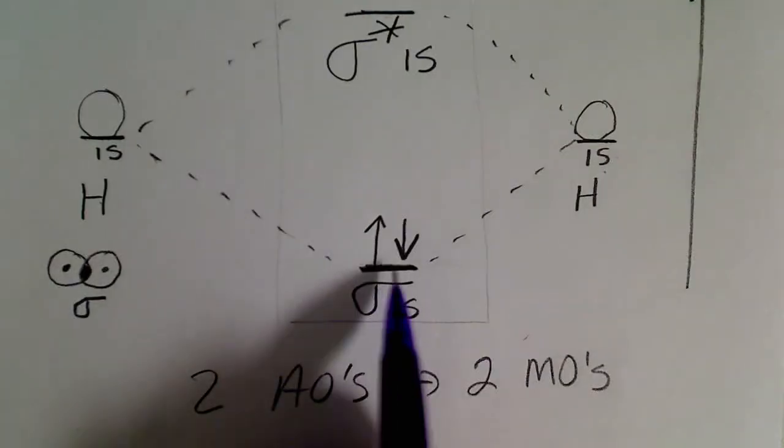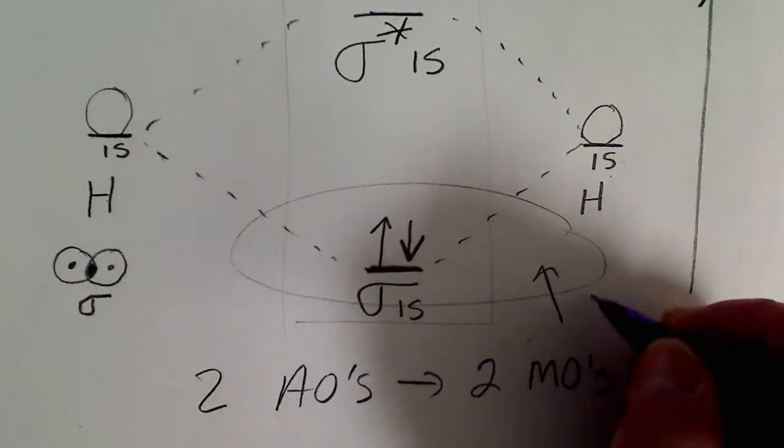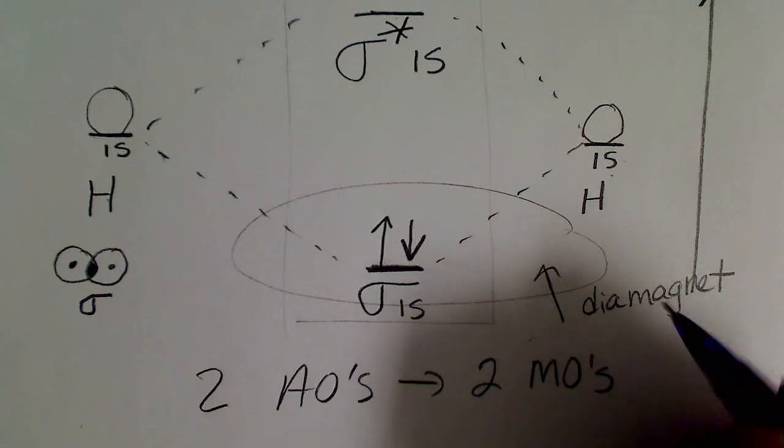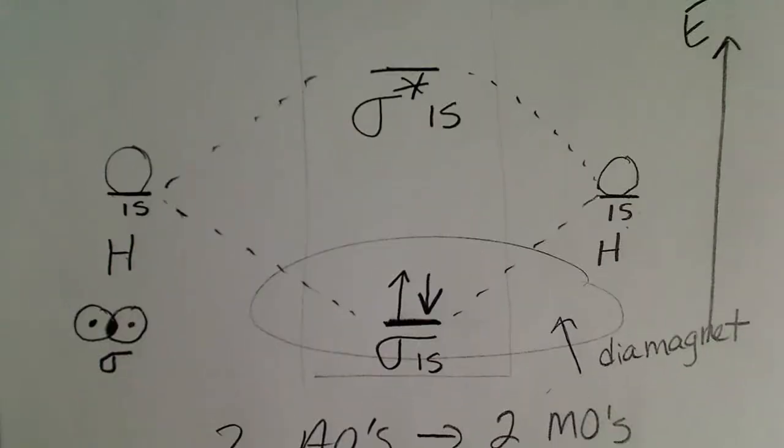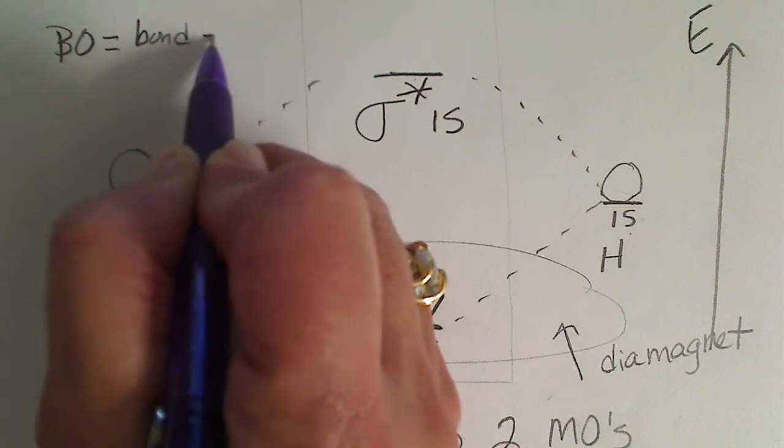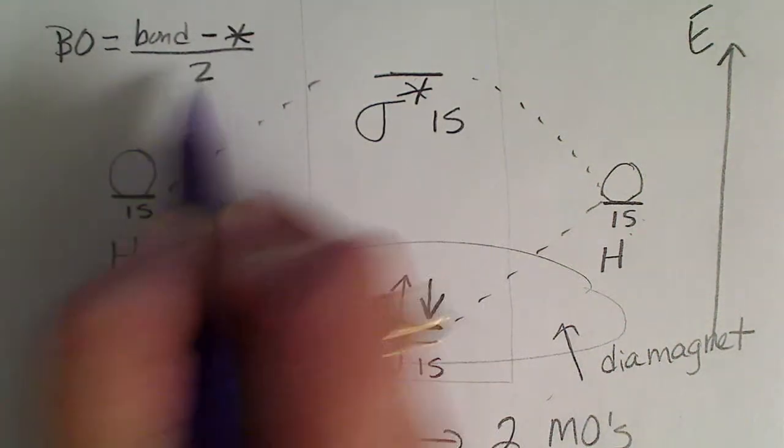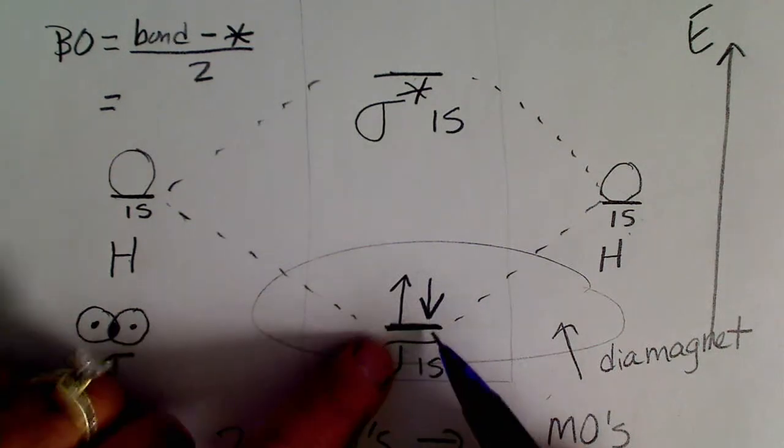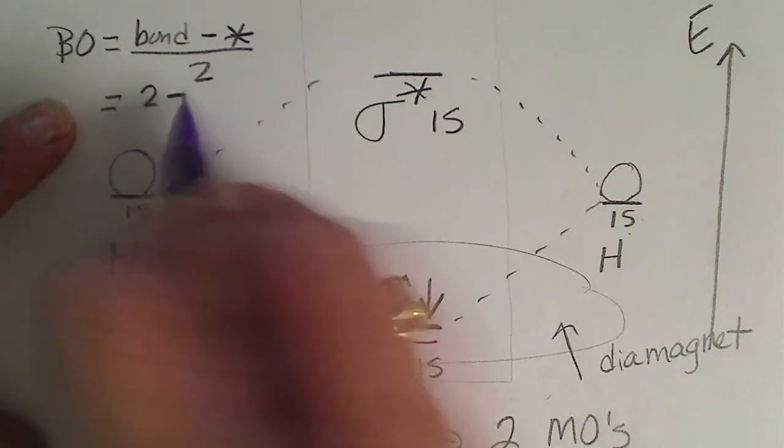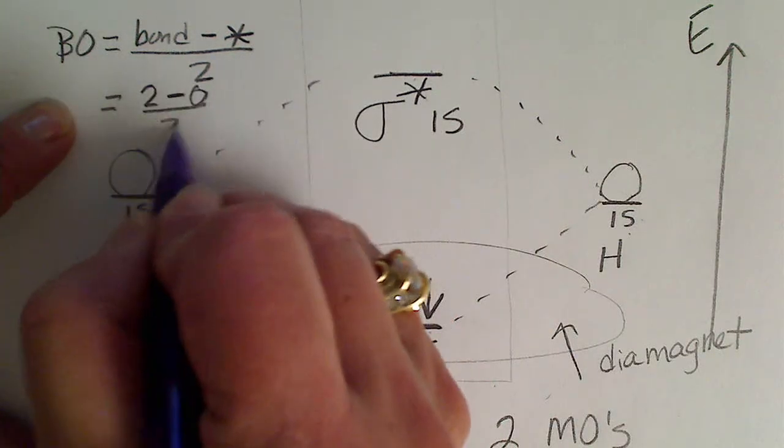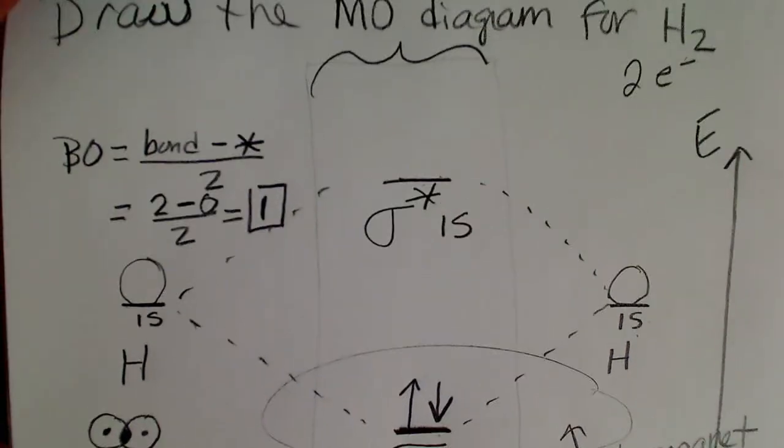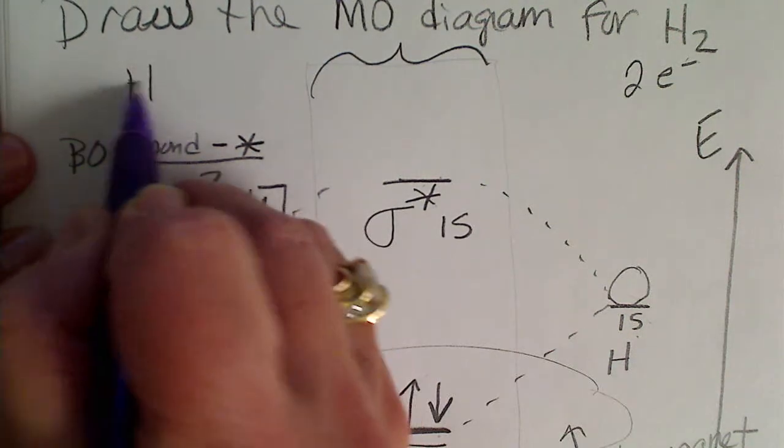If we looked at this, we could say those electrons are paired up, so that would be diamagnetic. Hydrogen would not respond in a magnetic field. And we could also calculate the bond order. To calculate the bond order, that is bonding minus antibonding electrons divided by 2. If we look at this picture, we've only got two electrons in the bonding orbitals. 2 minus, there are zero electrons in the antibonding. So 2 divided by 2 equals 1. And what that means is that the hydrogen bond is a single bond.